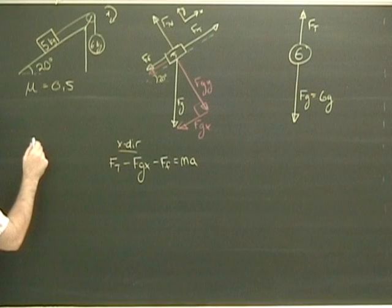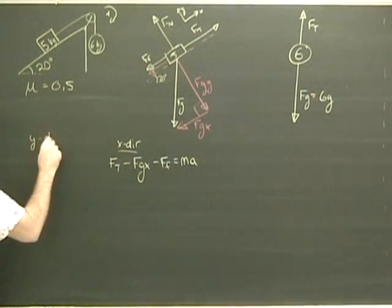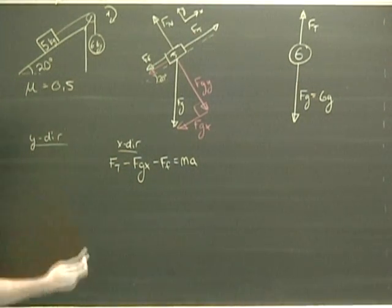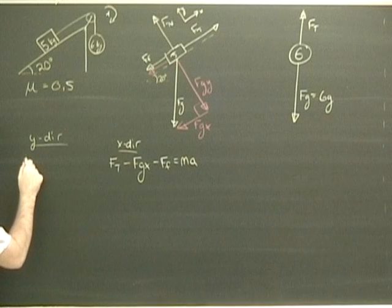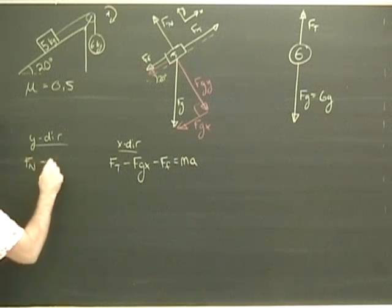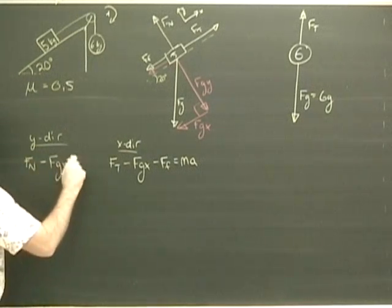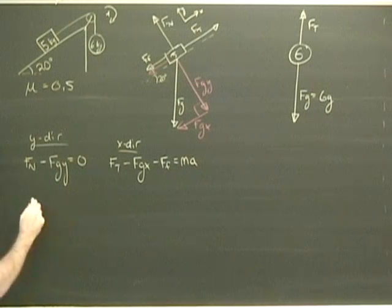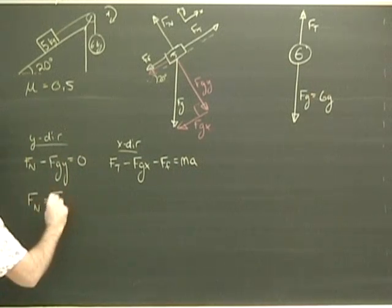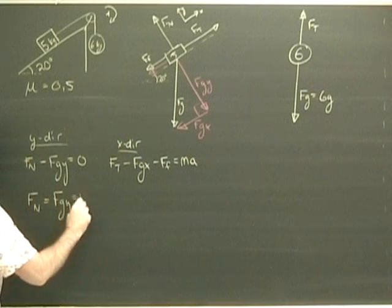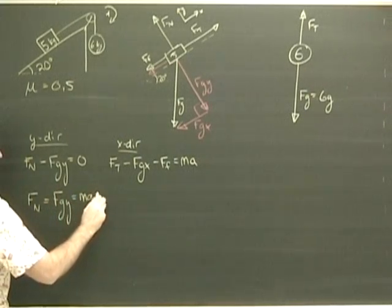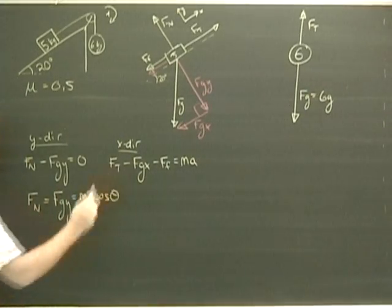Let's look in the y direction first. The y direction, which is by now hopefully familiar, we see that Fn minus Fgy is equal to zero. So therefore, the normal force is equal to Fgy, which is just mg cos theta.